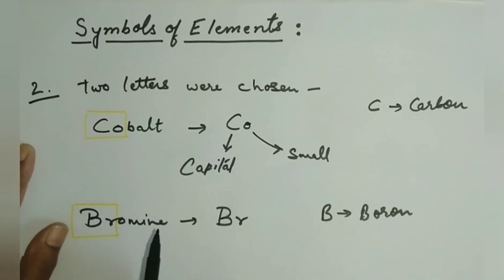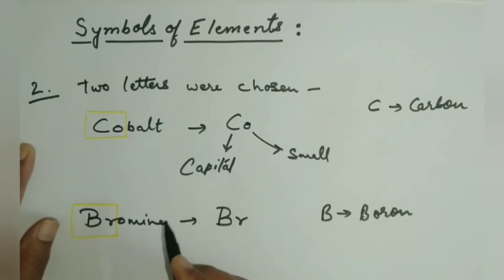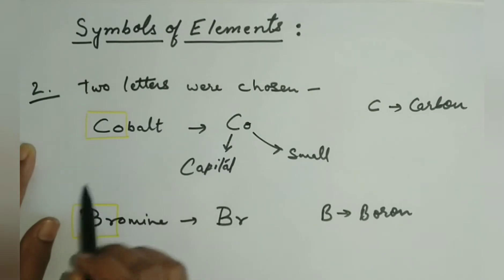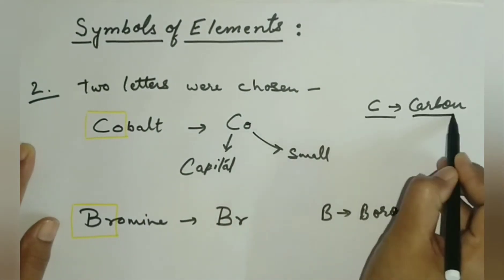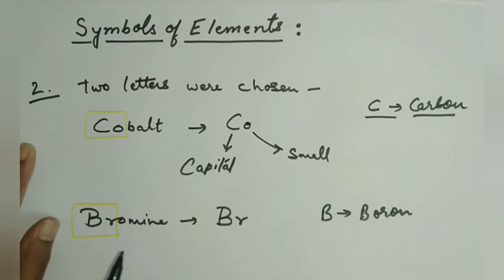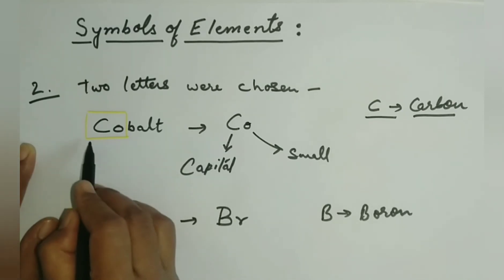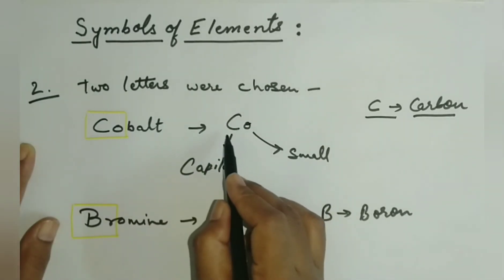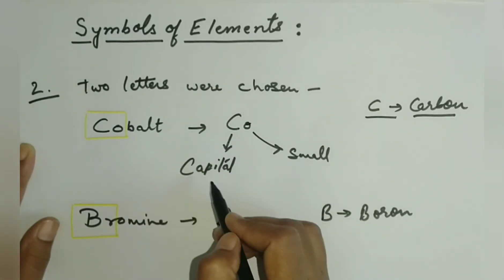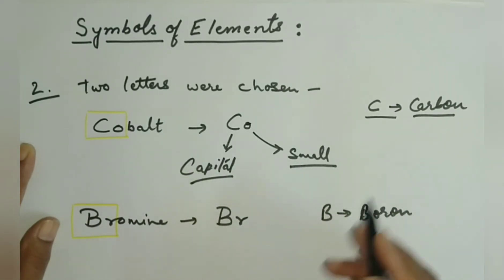Now all the elements cannot be represented by just the first letter as their symbol, because there are several elements which start with the same letter. For example, cobalt starts with C, but we cannot choose C as its symbol because C already represents carbon. So scientists thought of choosing two letters from the name of an element. In the case of cobalt, they chose the first two letters C and O. Whenever two letters are chosen as a symbol, the first letter is always written in capital and the second letter is written in small.